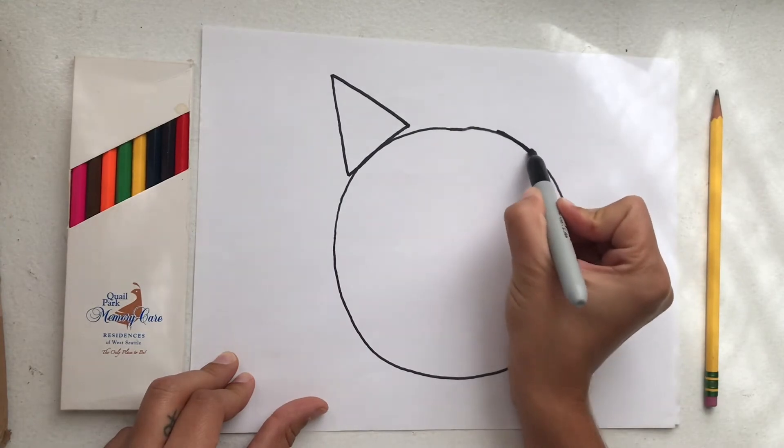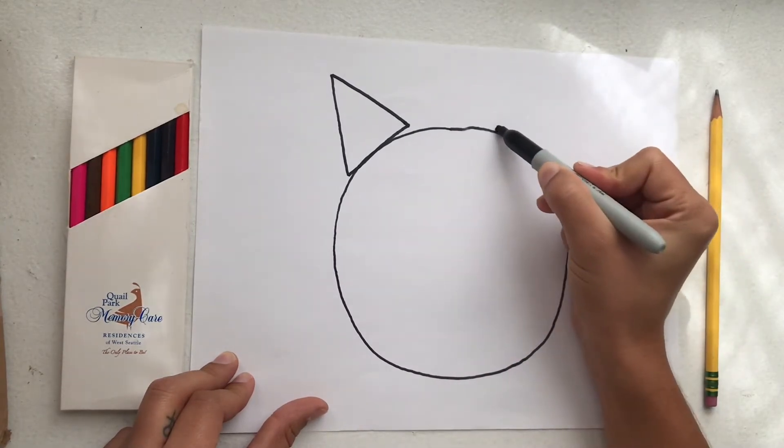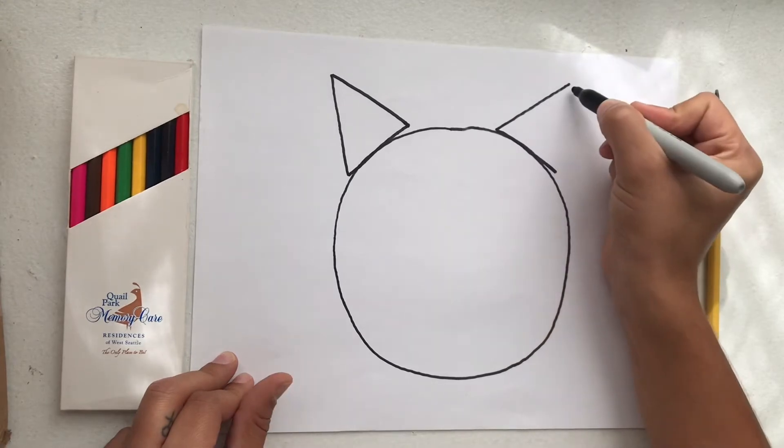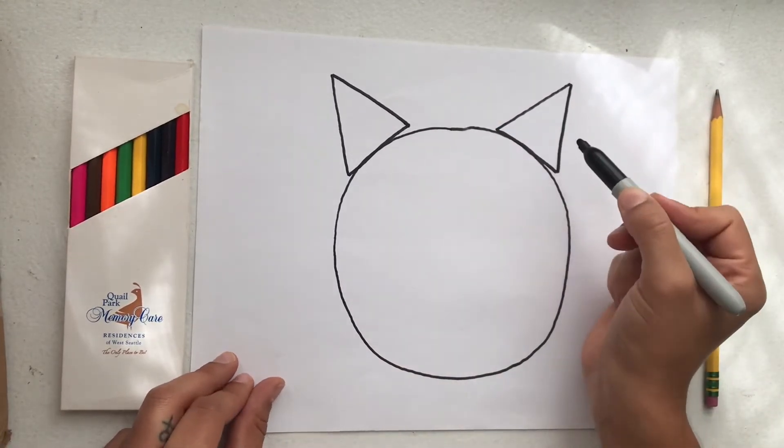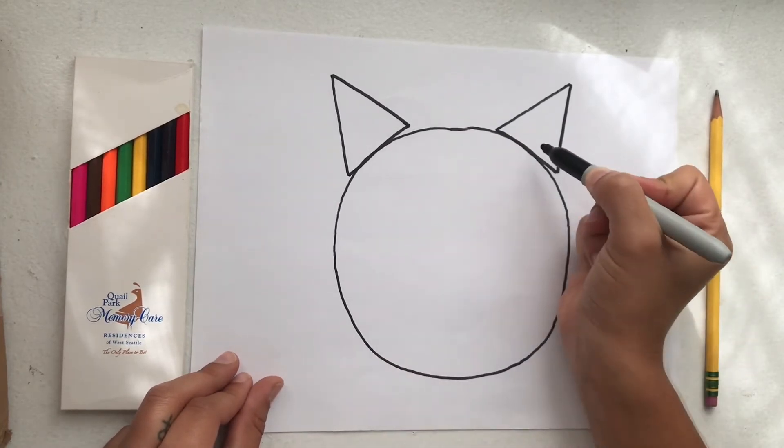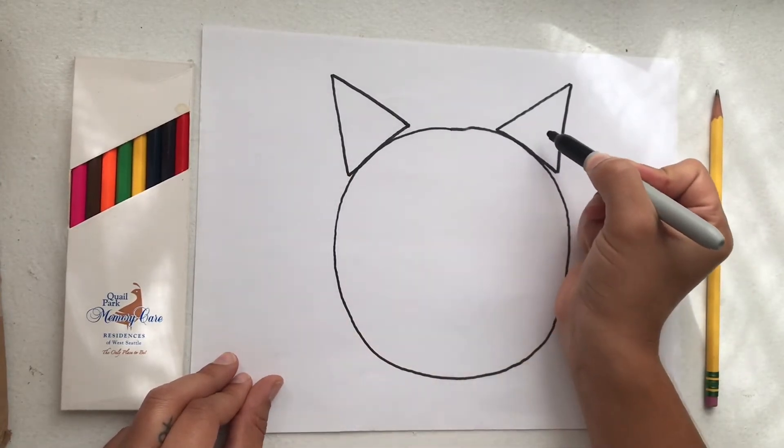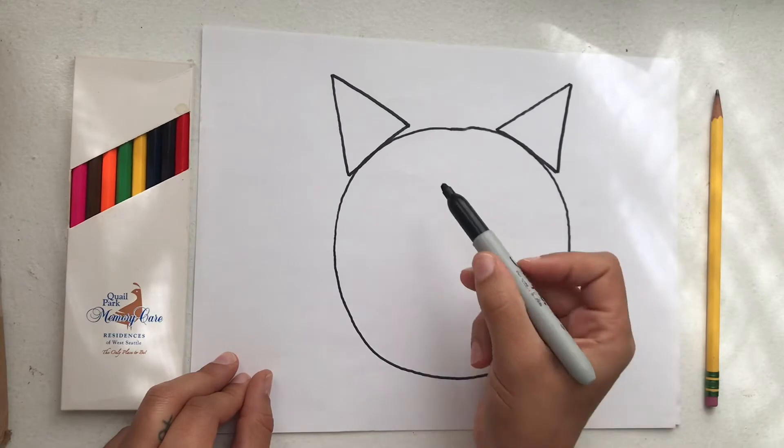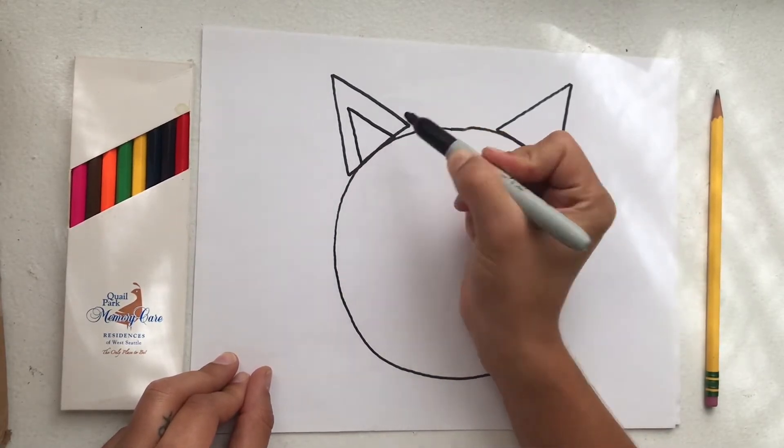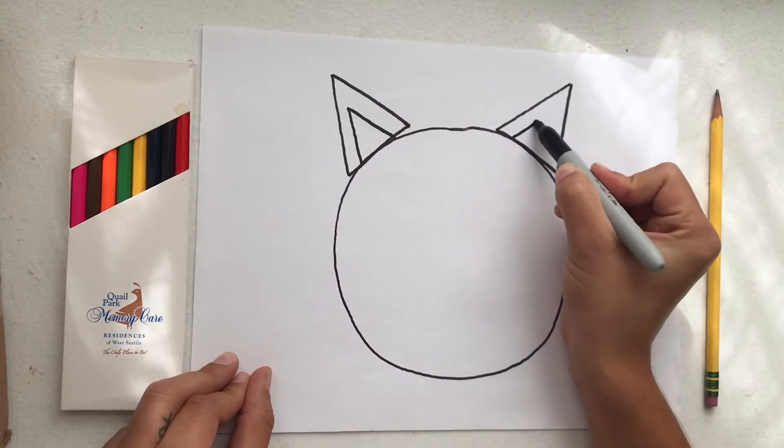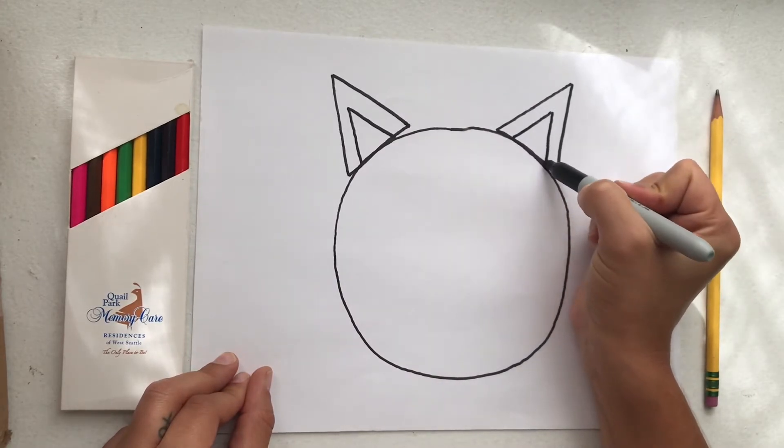I'm going to do another one right on the other side for the second ear. So so far we have one big circle and two small triangle ears. Inside these ears I'm going to do another even smaller triangle. This is going to be the inside of my cat's ears.